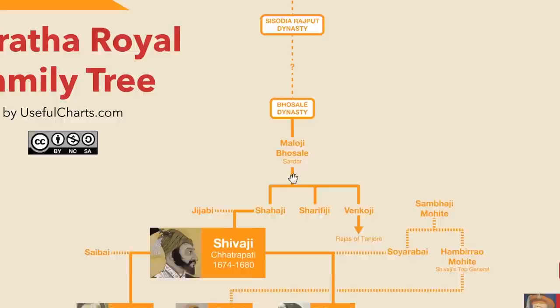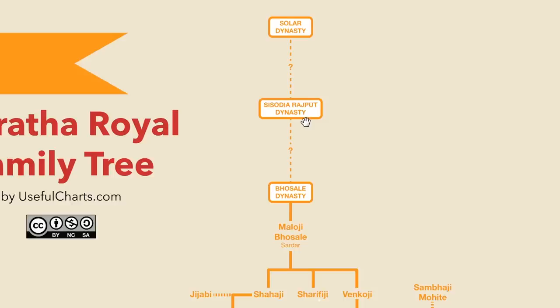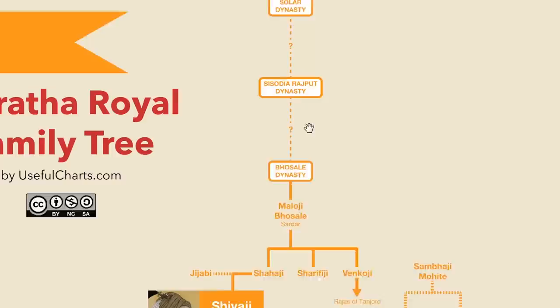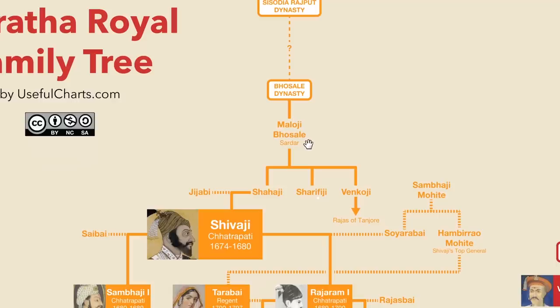Once the Bosle dynasty was well established, they claimed that they were the descendants of an earlier Rajput dynasty called the Sisodians. The Sisodians, in turn, claimed to be the descendants of an ancient dynasty known as the Solar Dynasty, a dynasty that includes well-known figures such as Rama and the Buddha. But in reality, it's likely that the Bosles simply created these links to past dynasties in order to bolster their legitimacy — something that numerous dynasties from all over the world have done. It's kind of a pattern.